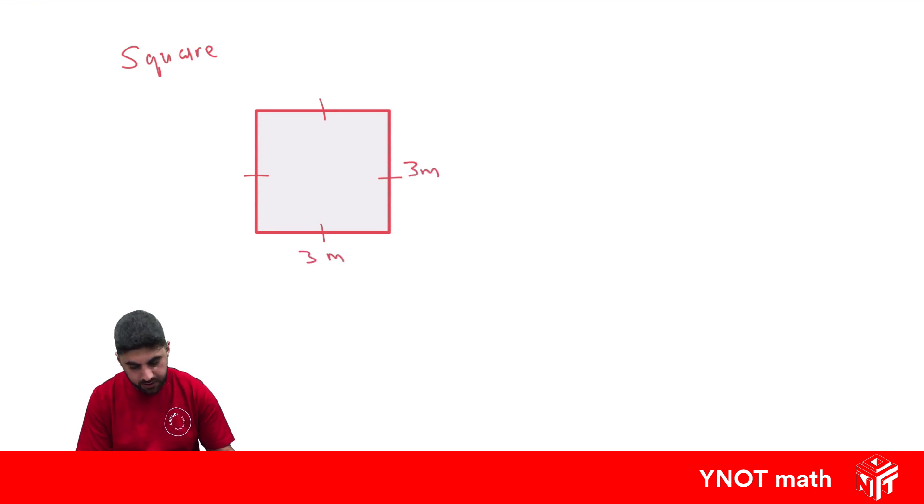And to find the area of a square, we just multiply that one side by itself. So in this case, we're doing 3 times 3, which is going to give us 9.